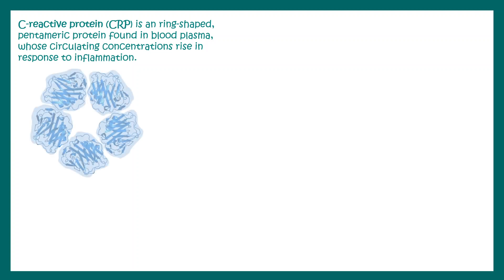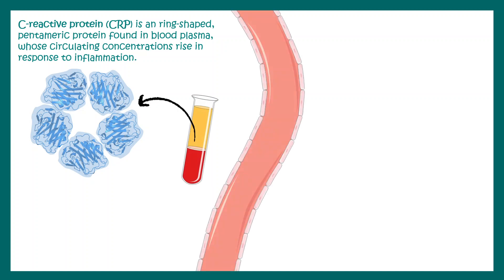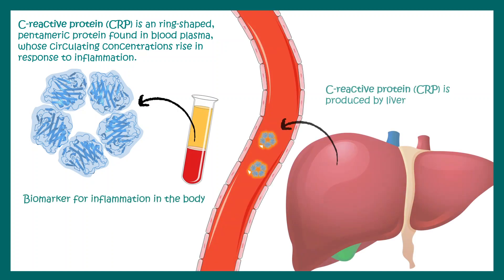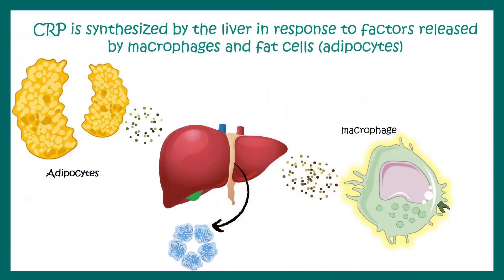Let's look at C-reactive protein in a bit more detail. It's a ring-shaped pentameric protein found in blood plasma, and its circulating concentration rises with inflammation. Generally, the liver secretes this protein. The liver knows when to secrete it because adipocytes or macrophages — a type of immune cell — secrete chemical molecules that signal the liver about the status of inflammation, and in response the liver secretes C-reactive protein.